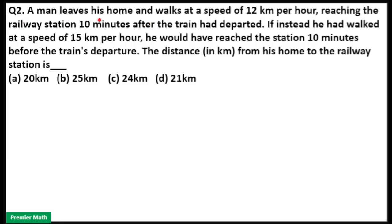A man leaves his home and walks at a speed of 12 km per hour, reaching the railway station 10 minutes after the train had departed. If instead he had walked at a speed of 15 km per hour, he would have reached the station 10 minutes before the train's departure. We have to find the distance from his home to the railway station.